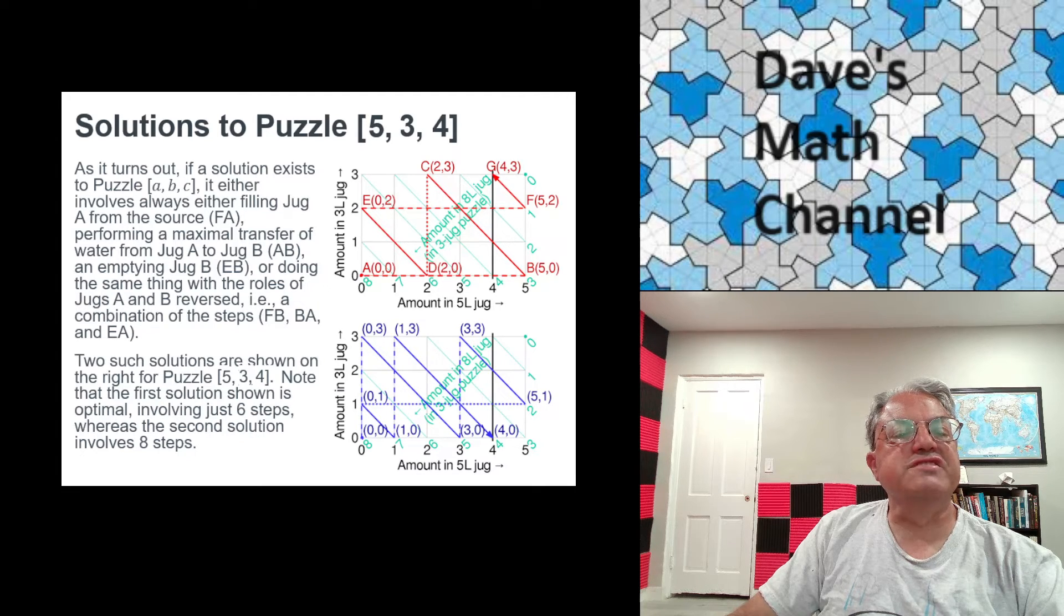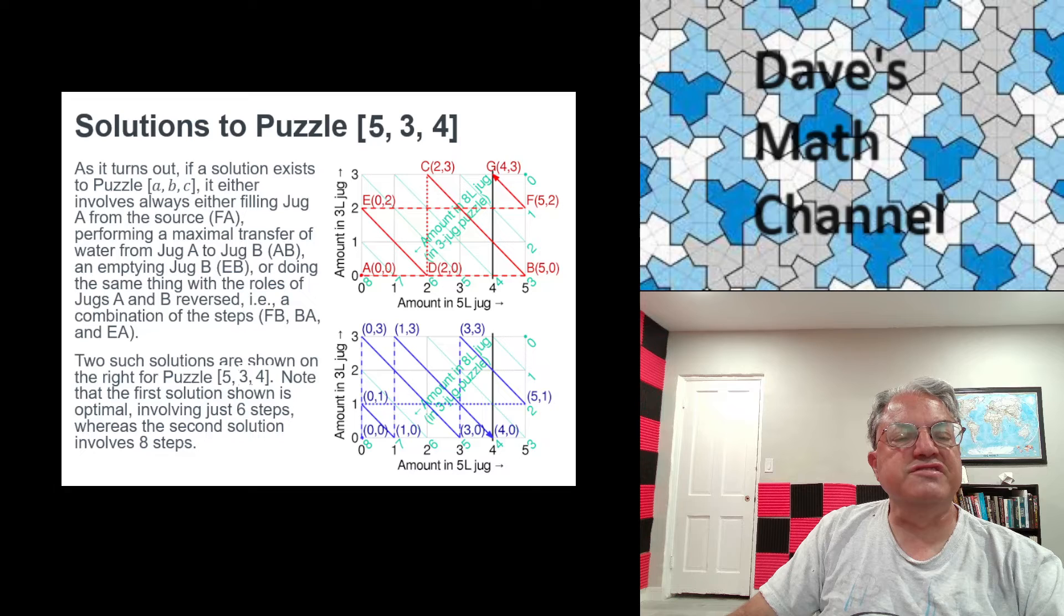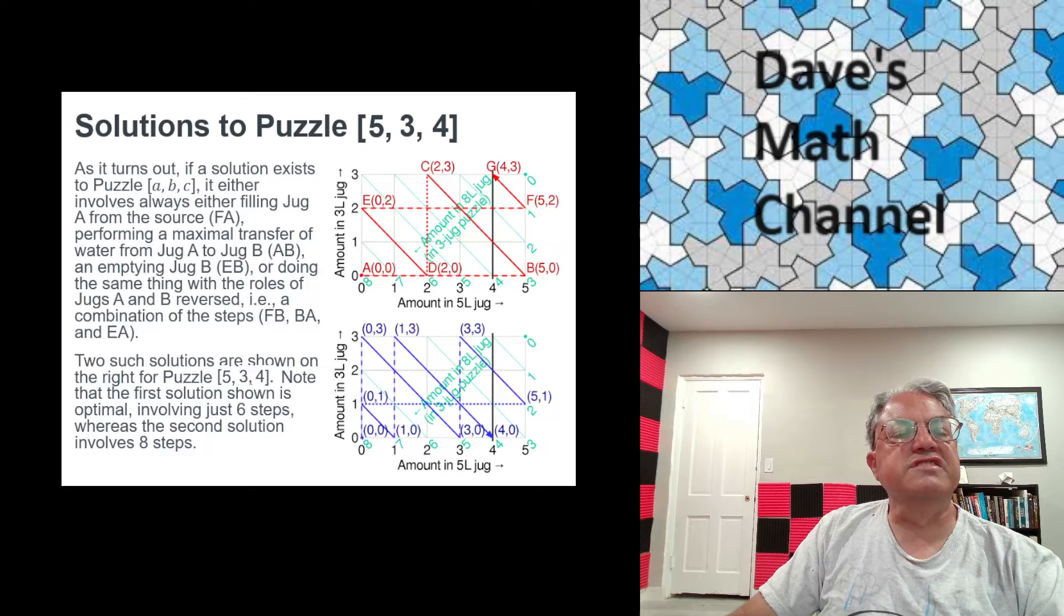That takes us to state C along this diagonal line going up and to the left. So now we're at state C, which is (2,3). That means there's now two liters of water in jug A and three liters of water in jug B. So we filled jug B. And then the next thing we do is we empty jug B. So we just dump the three liters of water in jug B to the sink. Now we're left at state D, which is (2,0).